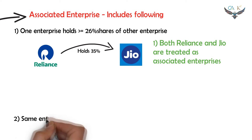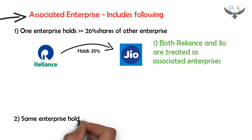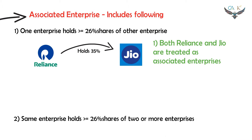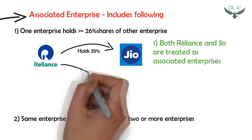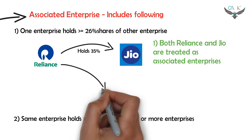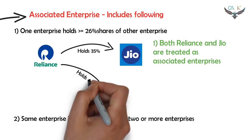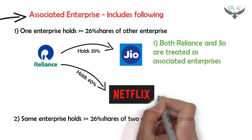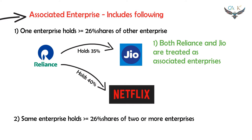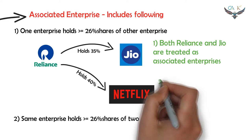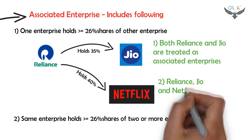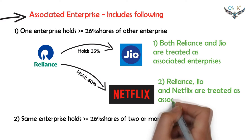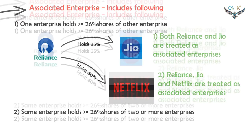A common enterprise holds 26% stake or more in two or more enterprises. Continuing with the above example: what if Reliance company also holds 40% stake in Netflix company? In such a case, Reliance company, Jio company, and Netflix company are all treated as associated enterprises to each other.